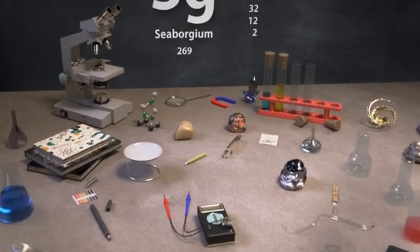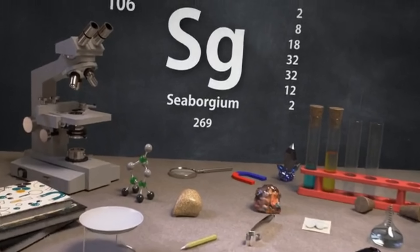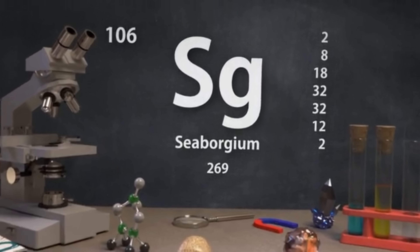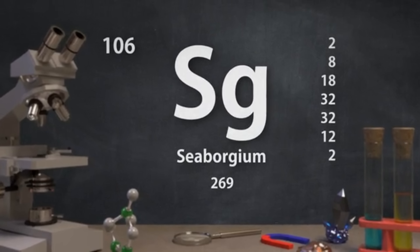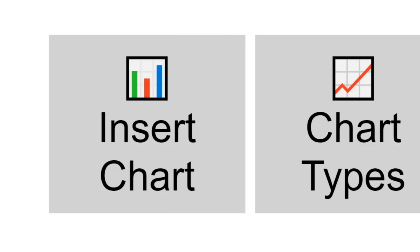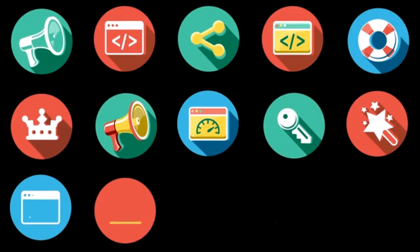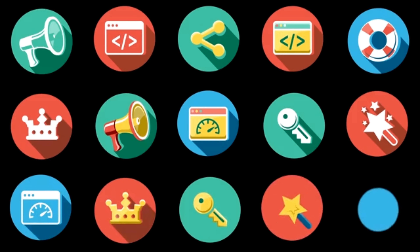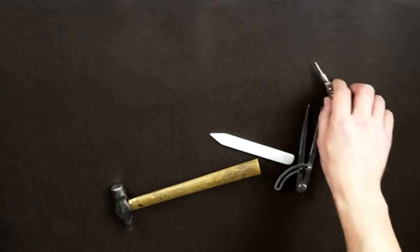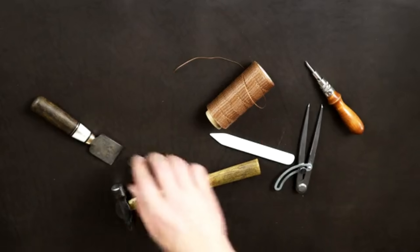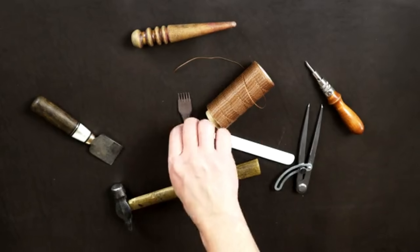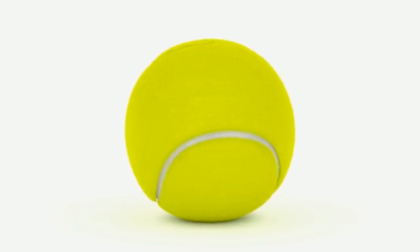That's why grouping things is so important in science. It helps us to see the similarities and differences between objects and understand them better. We can group things based on their properties, which are the characteristics that describe the object. Some properties that we can use to group things include shape, color, size, weight, texture, and material. For example, let's look at these four different materials: a wooden block, a glass sheet, a metal spoon, and a cotton cloth. We can group them based on their properties.